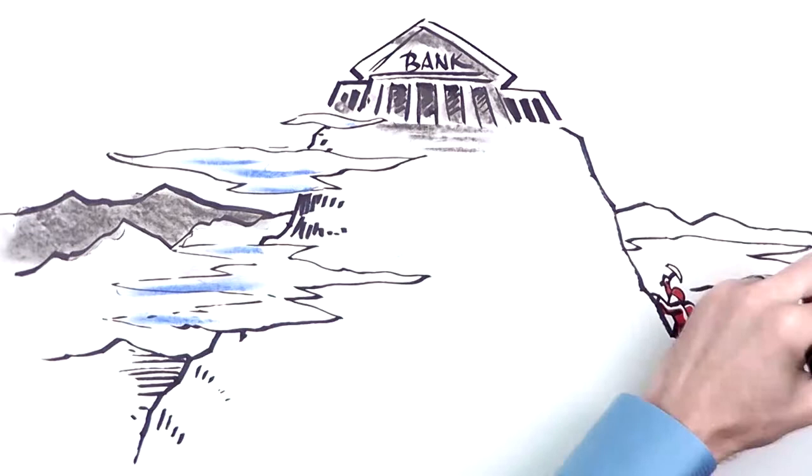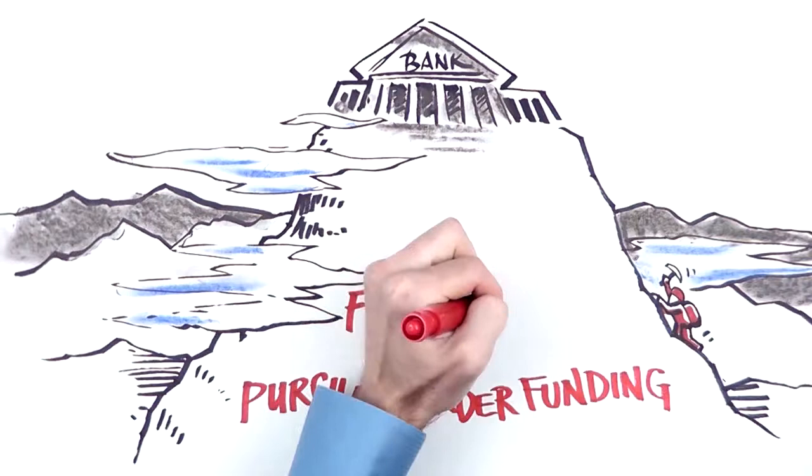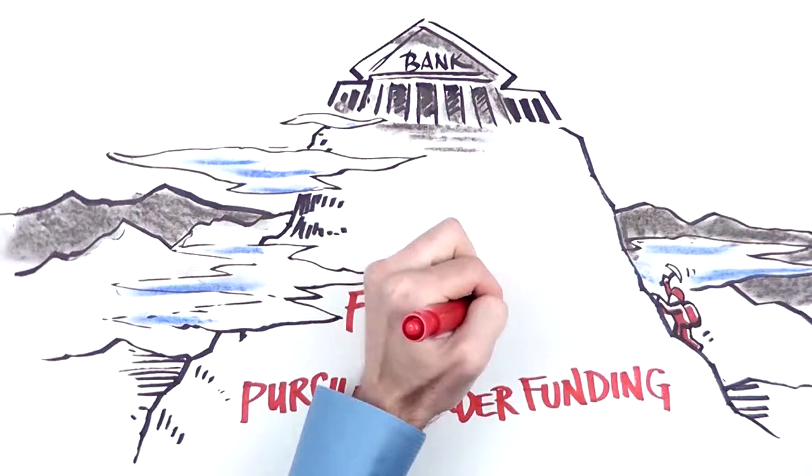For everybody else, moving up the pyramid from expensive investor capital toward traditional banking includes using alternative programs like purchase order funding, factoring, and asset-based lending.